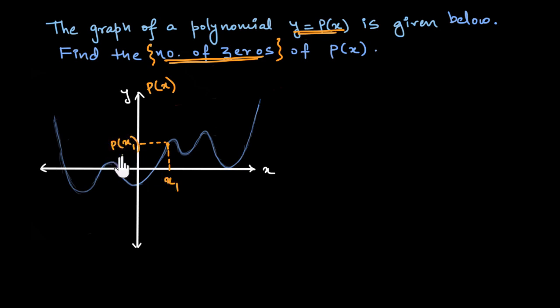And this would be true for any point on the graph here. So now if you already know what zeros are and if you were just struggling with how to see them on the graph, you can just go ahead and try this question on your own now.